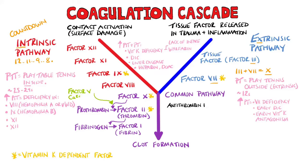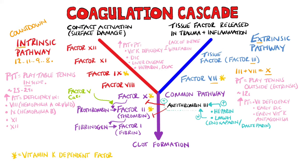Drugs used to prevent clotting act on different locations in the pathway. Heparin works by binding to antithrombin 3 and increasing antithrombin 3 activity, which inhibits activated factor X and thrombin. Low molecular weight heparins, like enoxaparin and deltaparin, work in a similar way, but the antithrombin 3–LMWH complex has less or no activity against thrombin while having a more specific affinity for activated factor X.